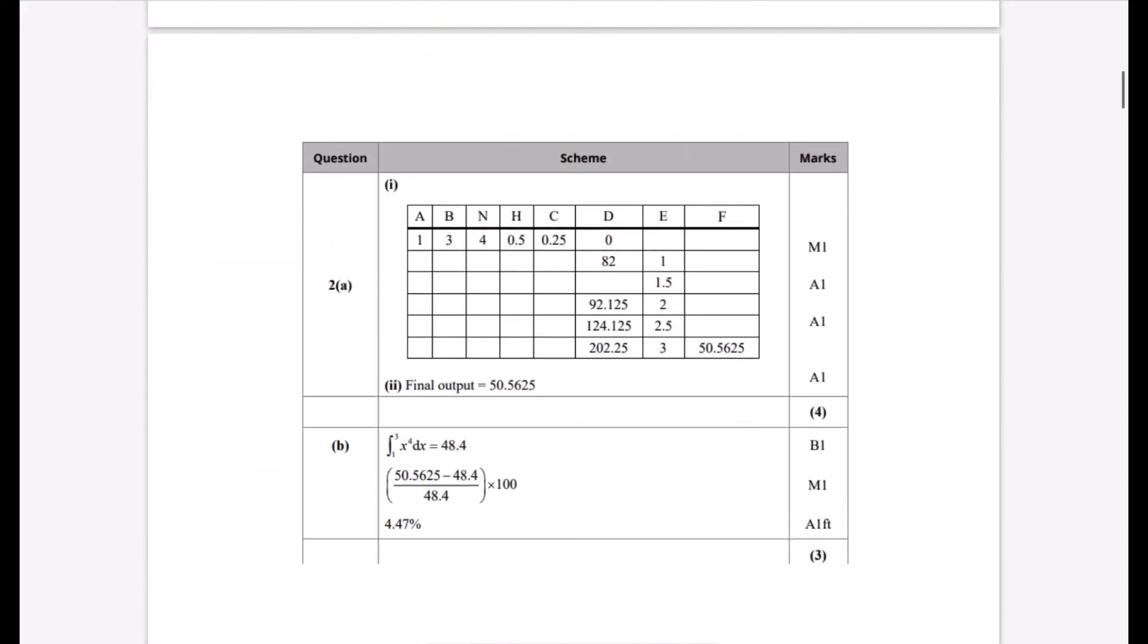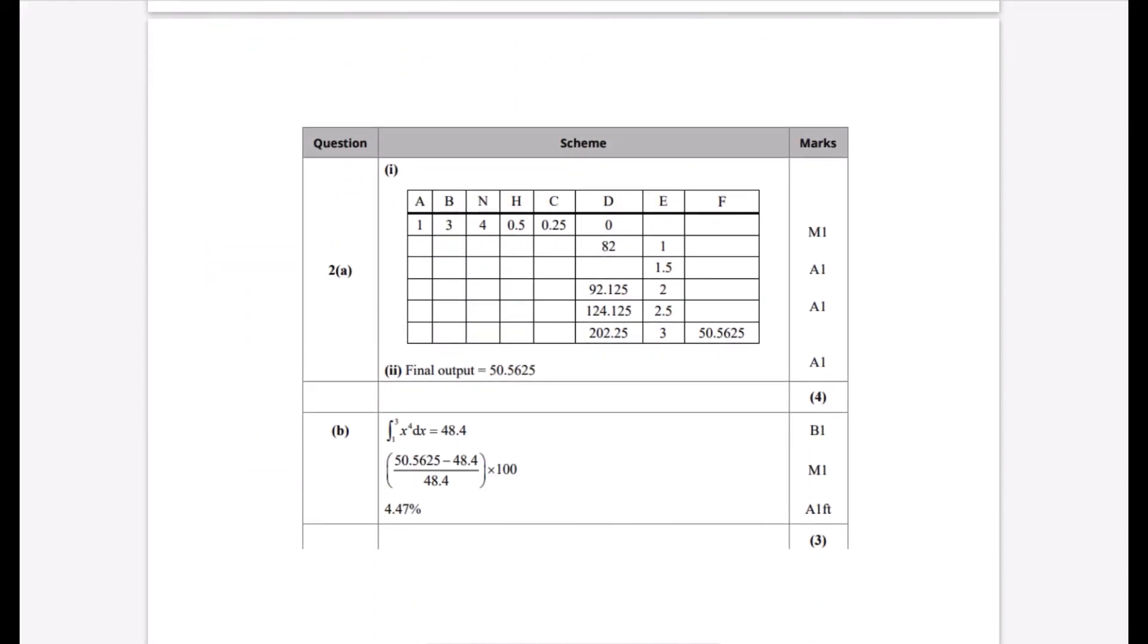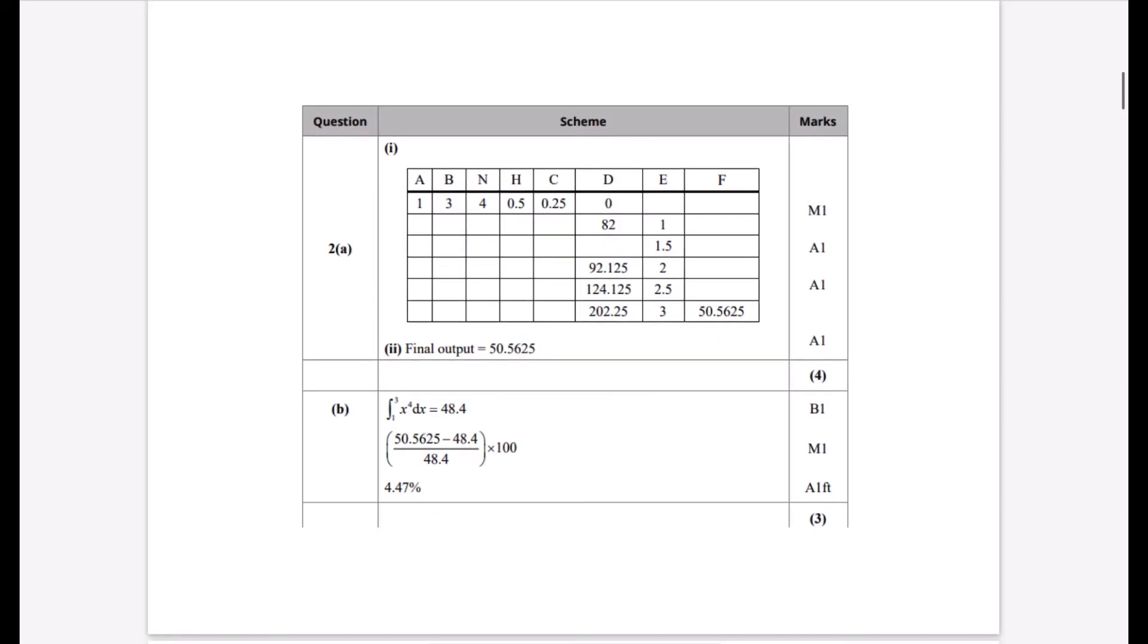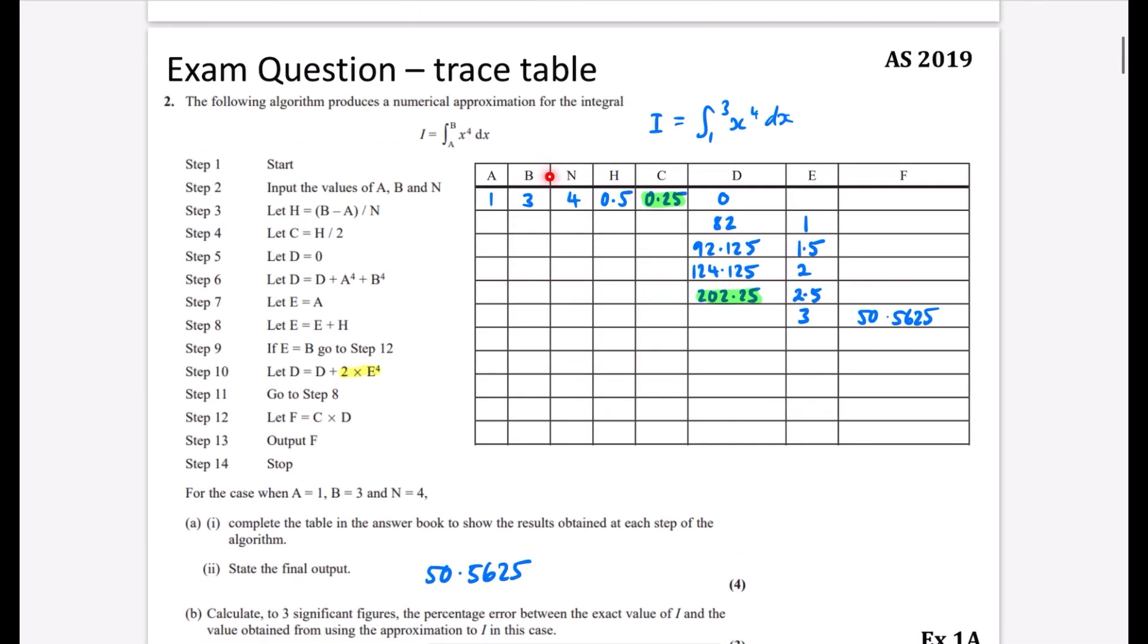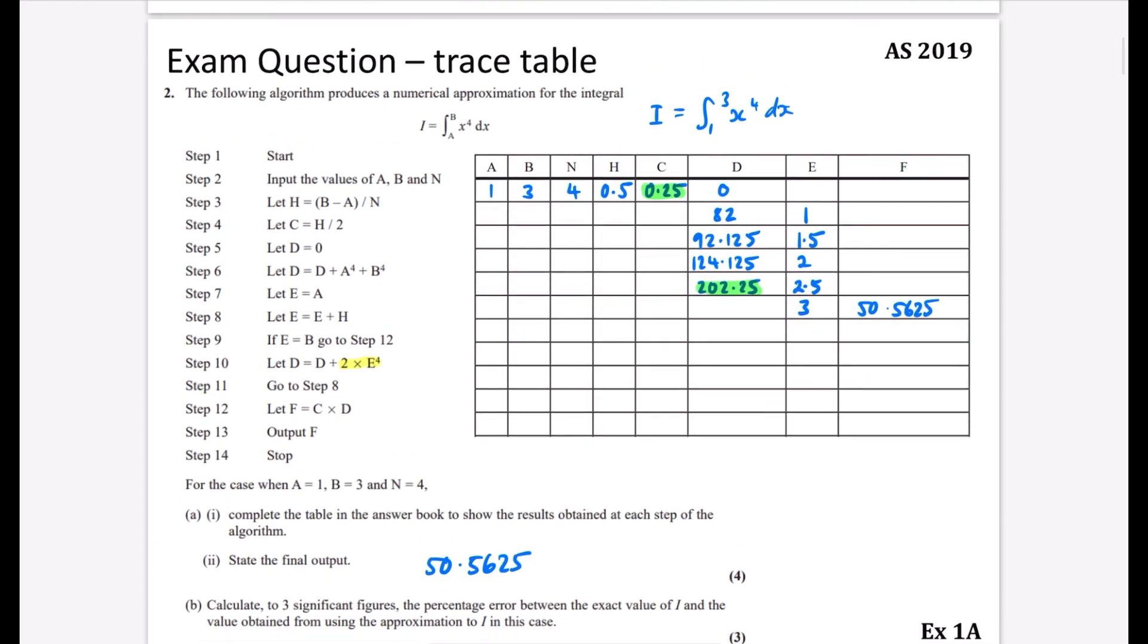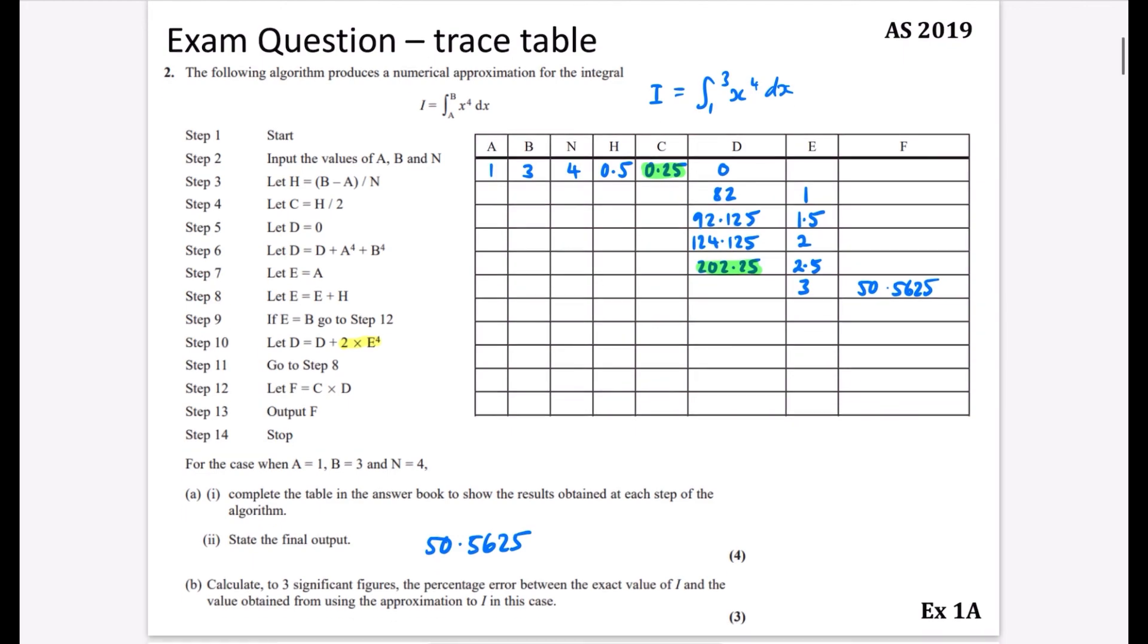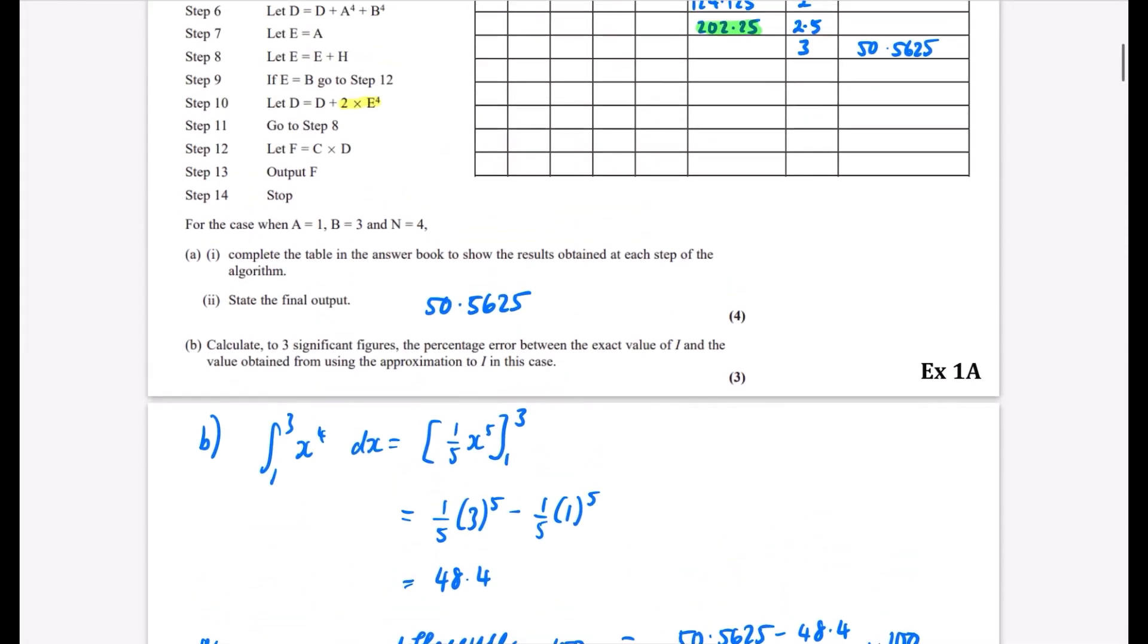Let's double-check we've got this right. There's everything in the trace table with the final output, and we've got the 4.47%. This is the only question I've seen on this, but you can use the trace table however you want. The textbook says you must move to a new line for each step, but I've checked the examiner materials—it's absolutely fine to do it the way I've been teaching you. Go have a go at the questions from exercise 1A, and in the next video we'll look at flowcharts.